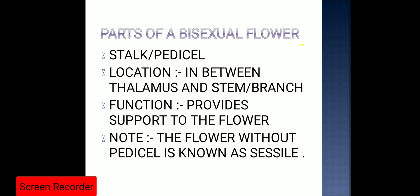Starting with the stalk or pedicel: its location is in between the thalamus and the stem or branch. Its function is to provide support to the flower as well as to provide nourishment — water, minerals, and food — to the flower through the pedicel. Certain flowers are directly attached to the stem or branch without a pedicel; such a flower is known as a sessile flower.